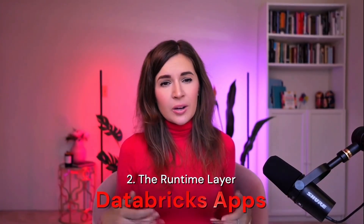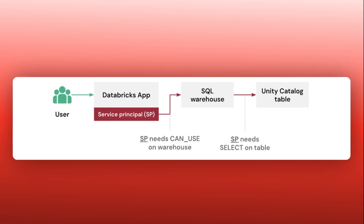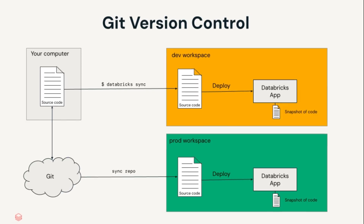Next, we have Databricks Apps, our secure serverless runtime for the web and application layer. Apps run on provisioned serverless compute, so you don't have to manage it yourself. You can start quickly with templates, and everything is integrated with Unity Catalog. Authentication, fine-grained permissions, and audit trails are built-in. Applications also come with production-ready version control and CI/CD pipelines, making it simple to manage and scale.